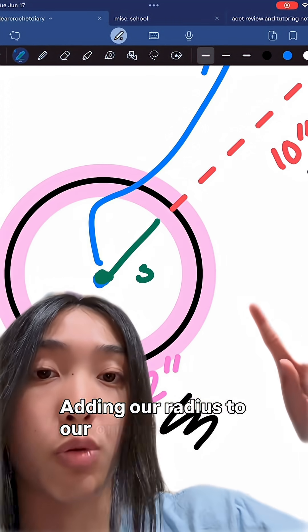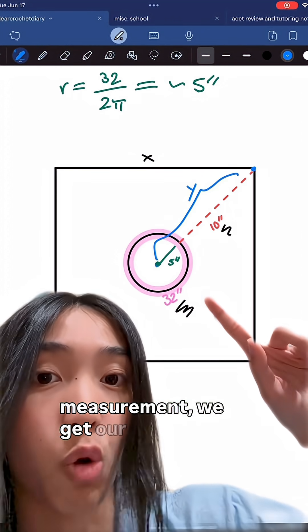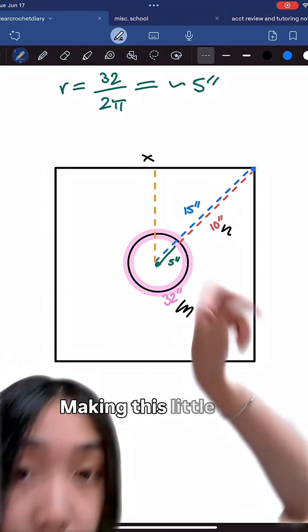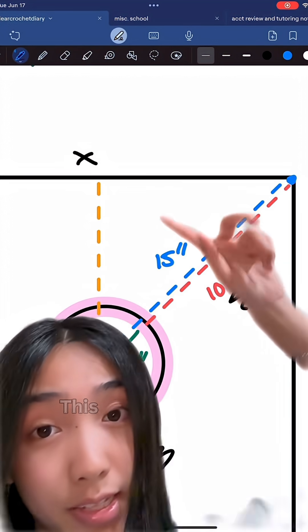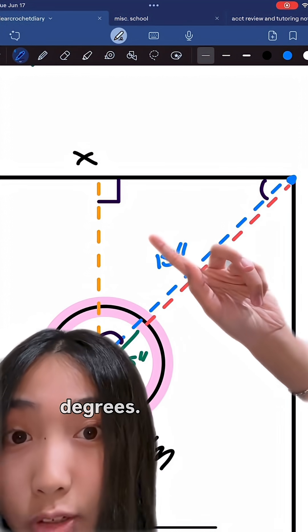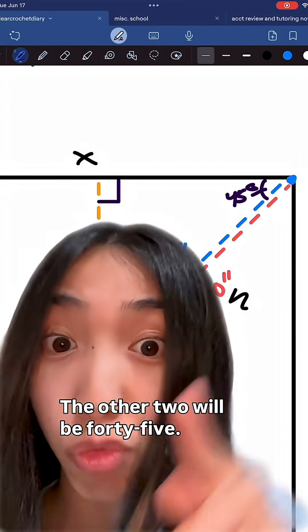Adding our radius to our original length measurement, we get our y length. Making this little section into a right triangle now, this top left one is going to be 90 degrees. The other two will be 45. Remember those two.